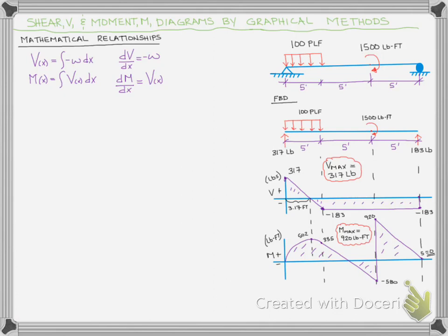By the same token, we can say that if we want to know the moment at some point X, we can just integrate the shear from zero to that point X. And if we need to know the slope of the moment diagram, that's just equal to the shear. But what does that all really mean?